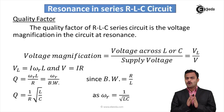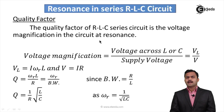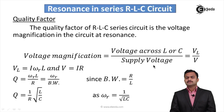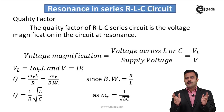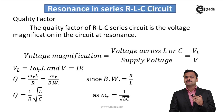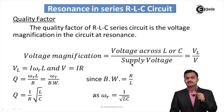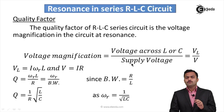One more important parameter for series resonance is the quality factor. The quality factor of a series RLC circuit is the voltage magnification in the circuit at resonance. Voltage magnification is the voltage across L or C divided by the supply voltage. For example, if you supply 10 volts, the voltage across the inductor or capacitor may be 100 or 1000 volts — so the supply voltage gets magnified to a higher level because of resonance, which is why it is called voltage magnification or the quality factor.